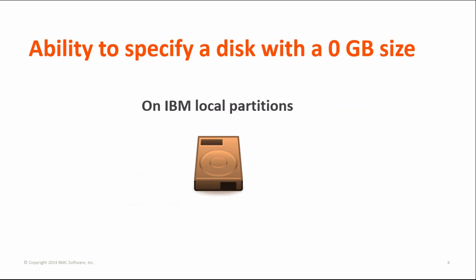When adding additional disks to a service through a post-deployment action, you can now specify a disk size of 0 GB for IBM local partitions. This enables you to create two adapter pairs for multipathing. For more information, see the BMC documentation.